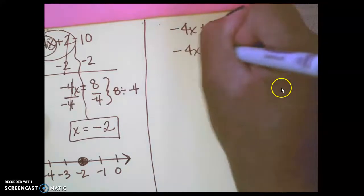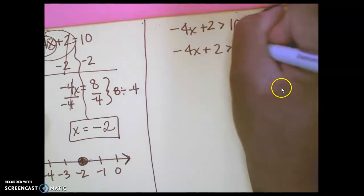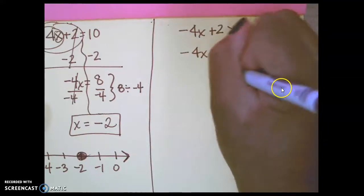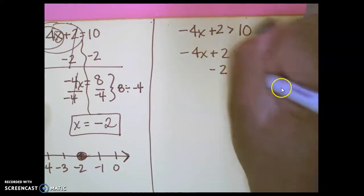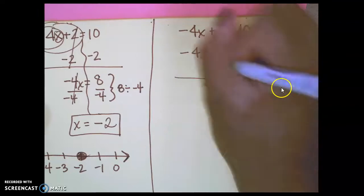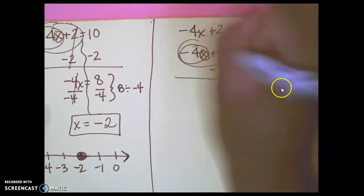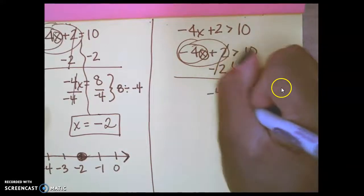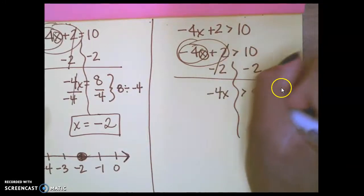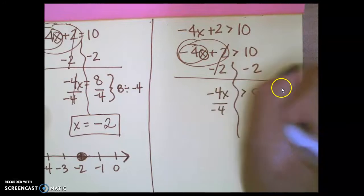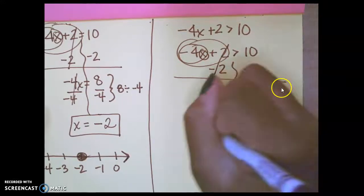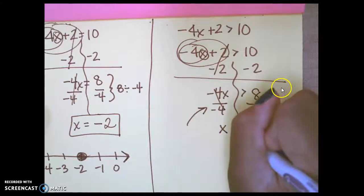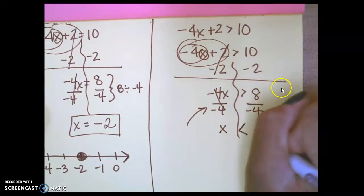Negative 4x plus 2 is greater than 10. My sign is going to flip here. I need to subtract 2 from both sides. Circle. Sorry. Whoop. There we go. Cross these out. Negative 4x is greater than 8. Divide by negative 4. Divide by negative 4. This means my sign will flip. Cross these out. x is now less than negative 2.